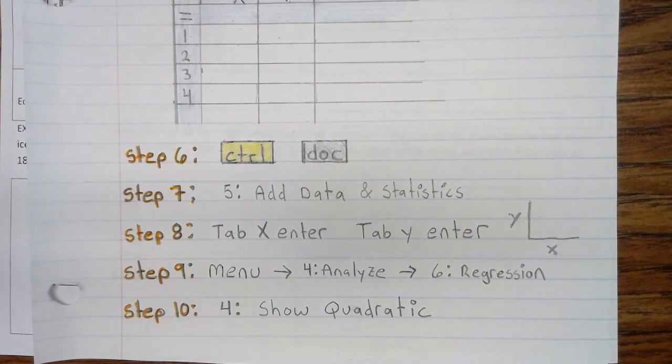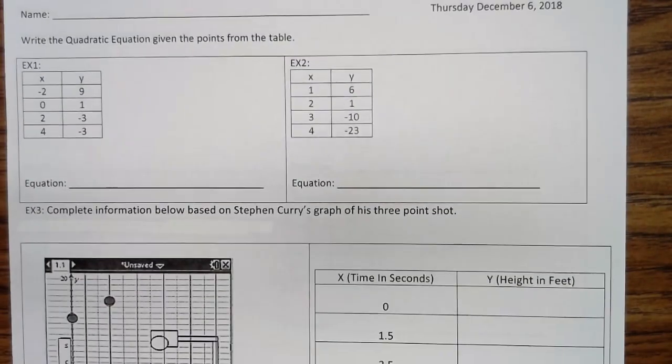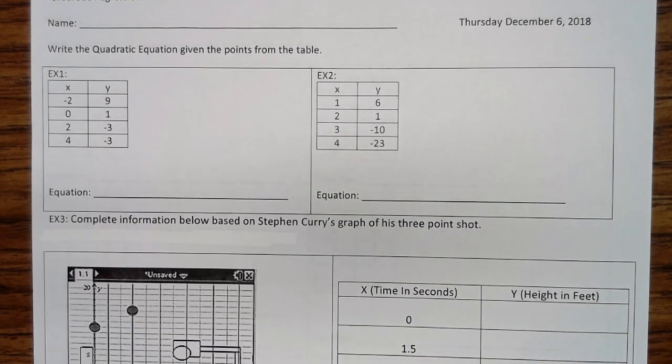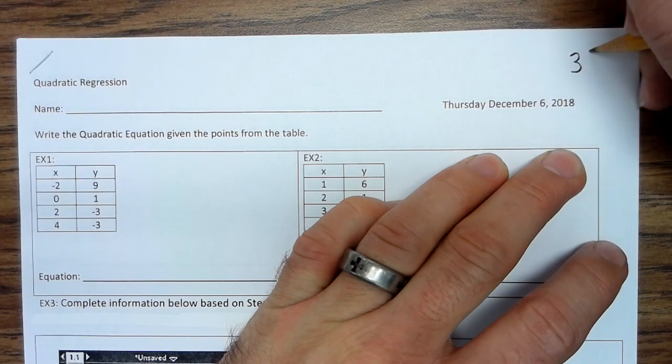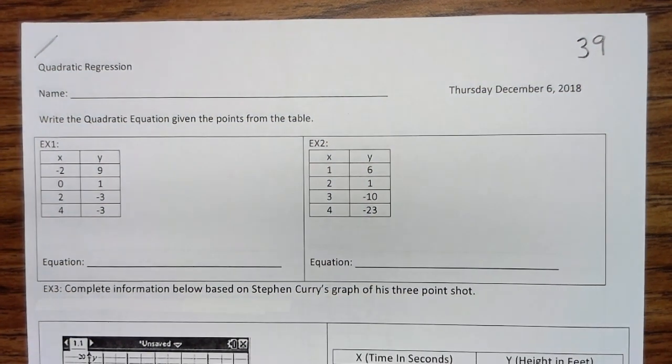Alright, if you would, update your notes. Alright, now your notes are updated. Let's take a look at the examples. Alright, write the quadratic equation given the points from the table. I almost forgot. This is going to be on page 39.